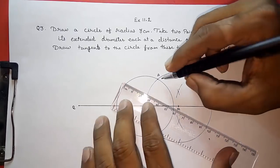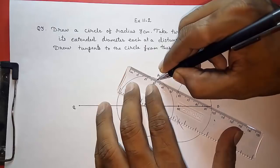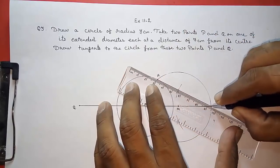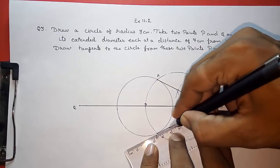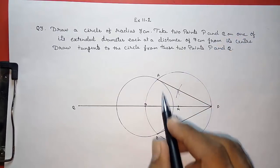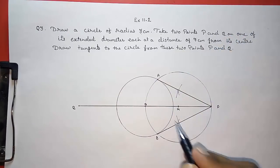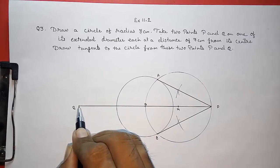Now join A to P and P to B. Look here I am doing it. These are our two tangents from P. The same thing we have to do from the Q also.